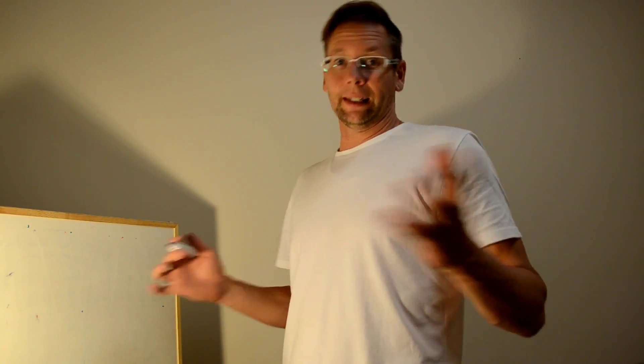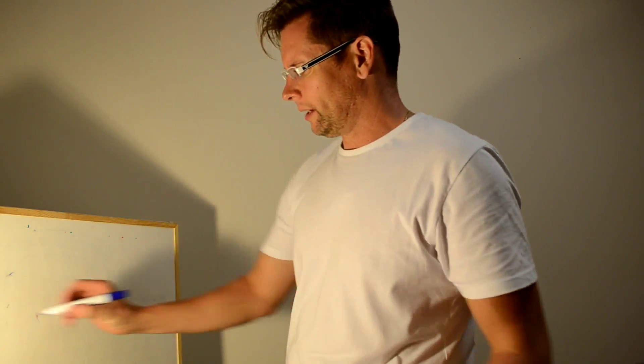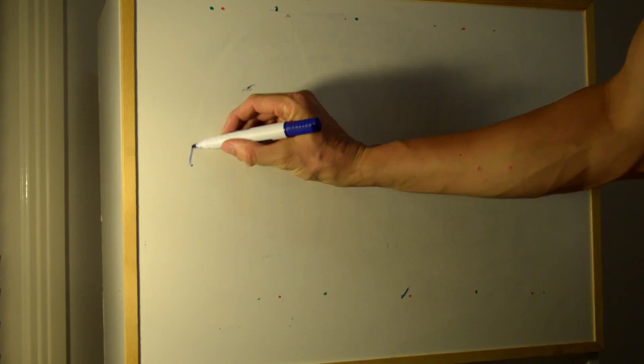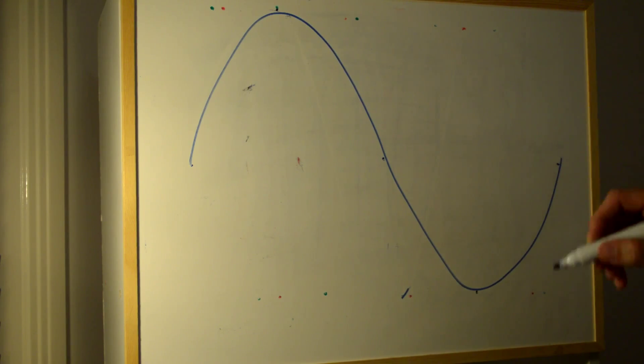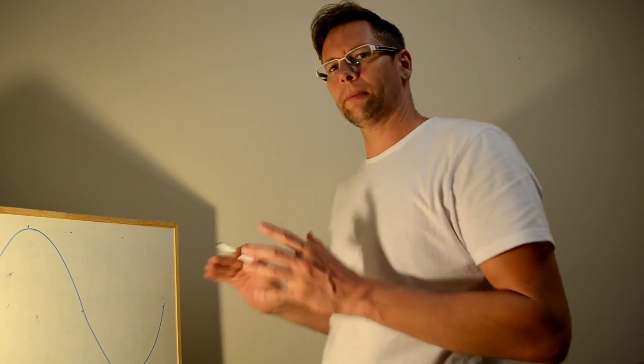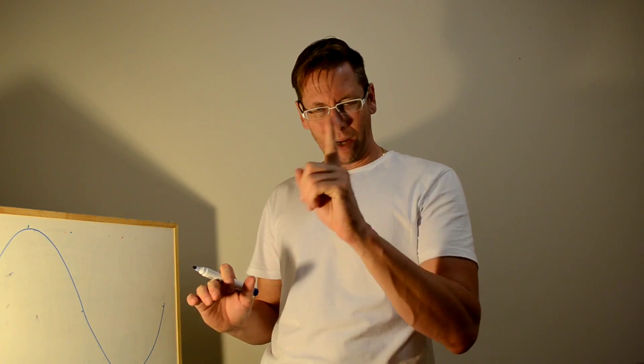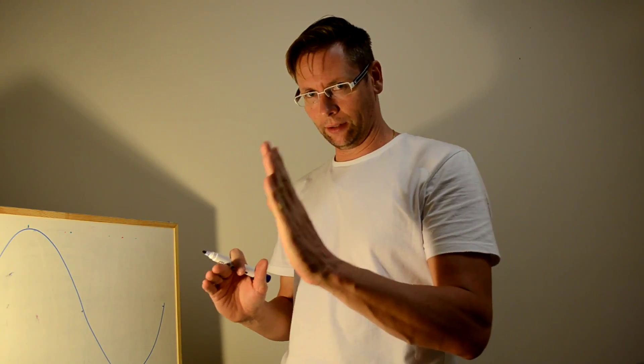A sine wave is generally considered the cleanest type of signal. So if we had a sine wave of 1 Hz, it looks something like that. If you look at that on a spectrum analyzer, you would just see one peak where that 1 Hz signal is.